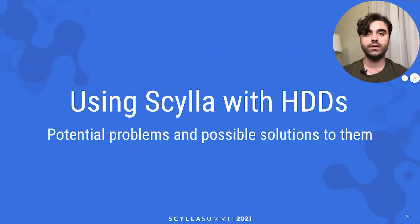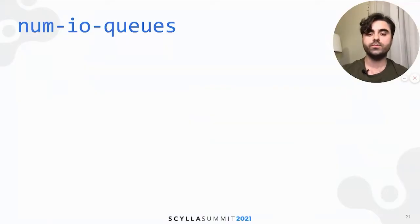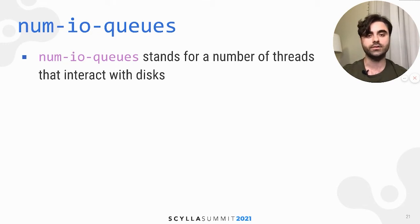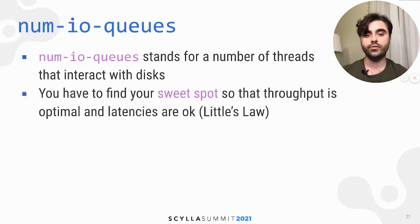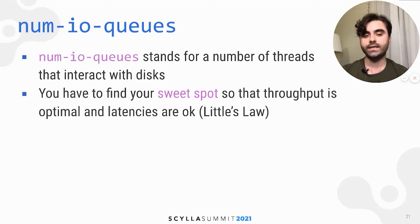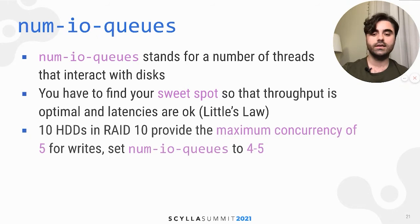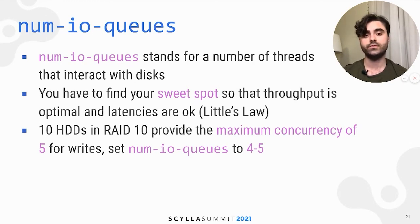HDDs are slow and we ran into some problems with our HDD setup. The first is the configuration parameter num_ioqs, which stands for the number of threads that interact with disks. In most SSD setups you will find this parameter set to something like the number of Scylla shards, but this won't work with HDDs — that is just too much. In an HDD setup you have to find your own sweet spot so that throughput is optimal and latencies are still acceptable. There is a great mathematical result called Little's Law — roughly stated: the more concurrency you give, the more time it will take to handle one request. An HDD can handle one request at a time, so given 10 HDDs in RAID 10, you have a maximum concurrency of 5 for writes, and you should set num_ioqs to something like 4 or 5.